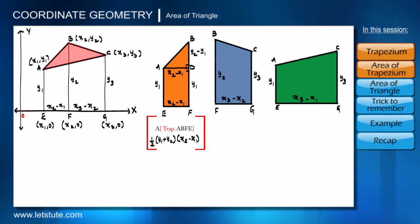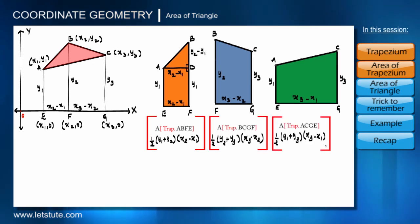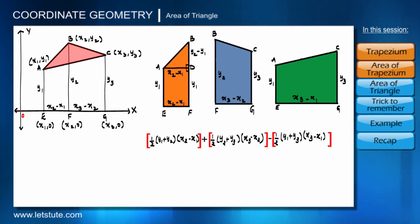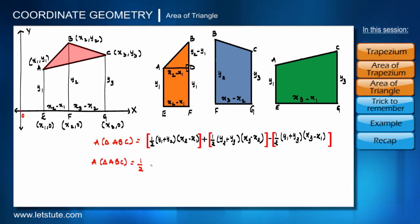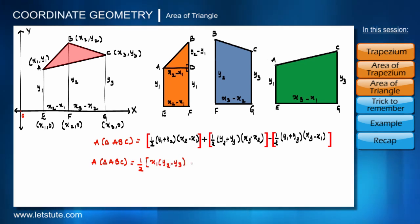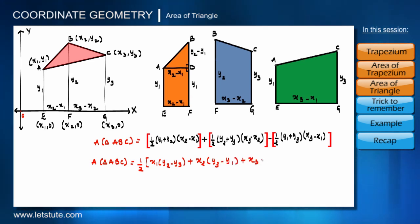Adding the areas of the first two trapeziums and subtracting the third, we get the area of triangle ABC. After calculating and rearranging the terms, the area of triangle ABC equals half times [x1(y2 minus y3) plus x2(y3 minus y1) plus x3(y1 minus y2)].